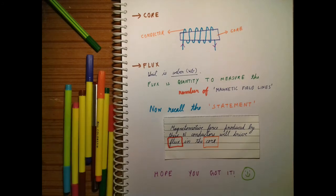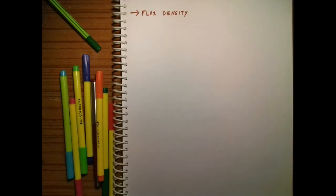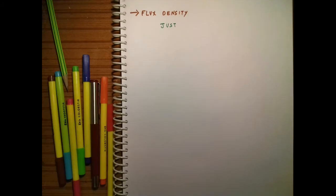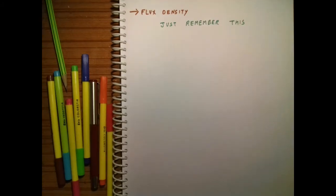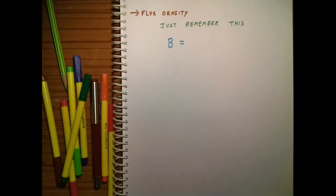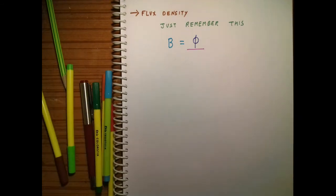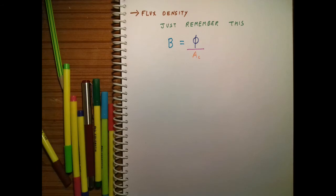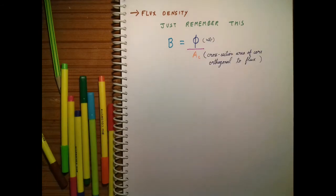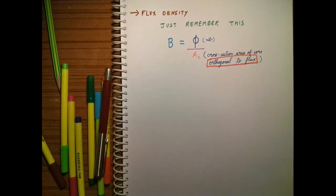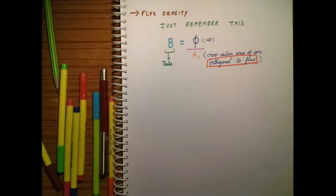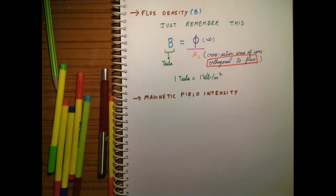Flux density B is equal to flux divided by the cross-sectional area of the core orthogonal to the flux — 'orthogonal to flux' is important. The unit of B is Tesla, so one Tesla is equal to one Weber per meter square.